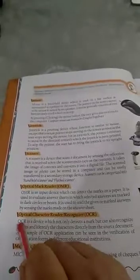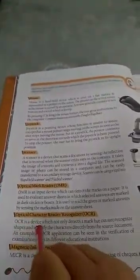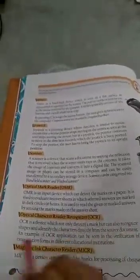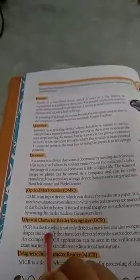Optical character reader is a device which not only detects the mark but also recognizes the shapes and identifies the characters directly from the source document. So in OMR only the shapes were being recognized but in optical character reader the characters are also being recognized.